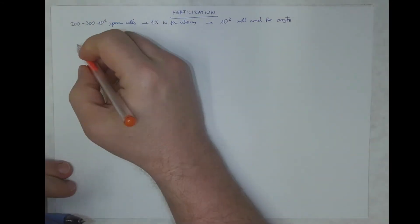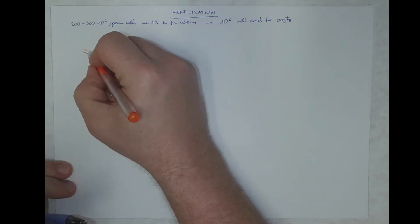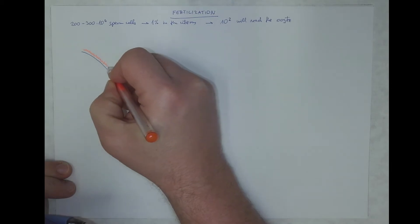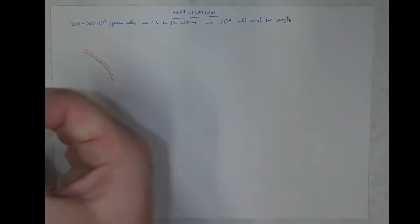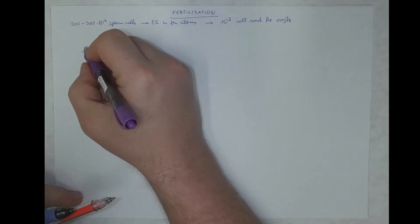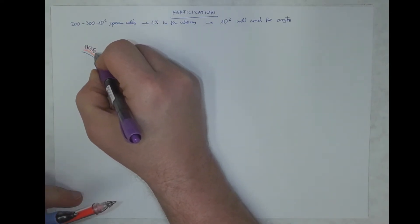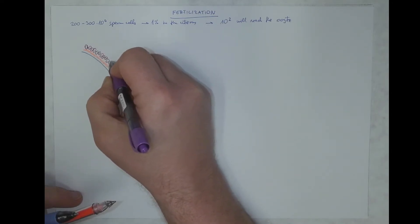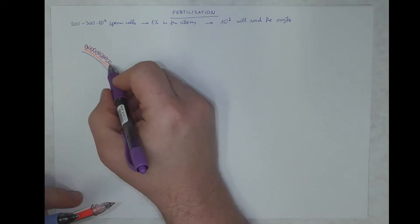So we got the cell membrane on the oocyte. We know we got the zona pellucida, a layer made of glycoproteins. And then we got the corona radiata cells sitting here on the zona pellucida, which is the product of the membrana granulosa and the oocyte.